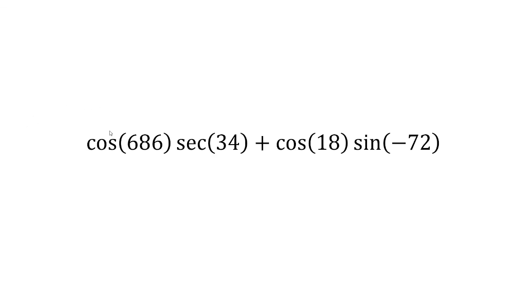We want to simplify the expression cosine 686 degrees times secant of 34 degrees plus cosine of 18 degrees times sine of negative 72 degrees.